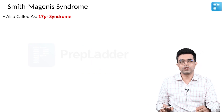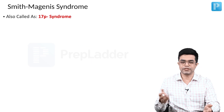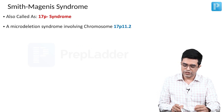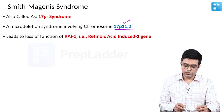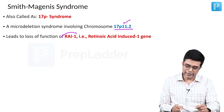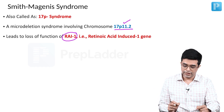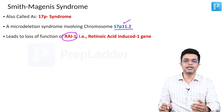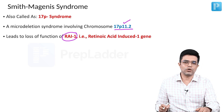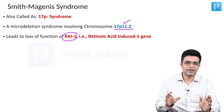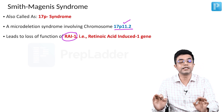Smith-Magnese syndrome is also called 17P deletion syndrome or 17P minus syndrome. It is a micro-deletion syndrome involving chromosome 17P11.2. It leads to loss of function of the RAI1 gene, that is the retinoic acid induced 1 gene. RAI1 has multiple roles — it plays a role in cell-cell interaction and is also implicated in ensuring the child has a normal circadian rhythm.